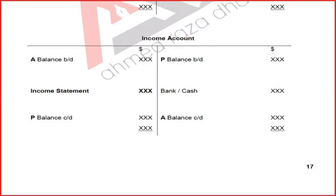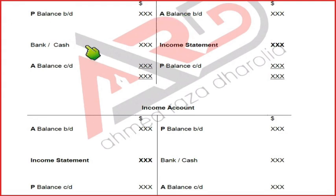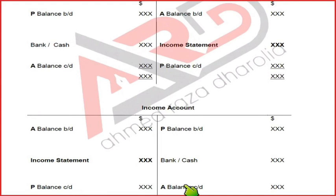For income accounts, the mnemonic is APPA — Accrued, Prepaid, Prepaid, Accrued — which is the exact opposite of PAAP used for expense accounts. In the account we write balance brought down and balance carried down rather than the words accrued and prepaid.